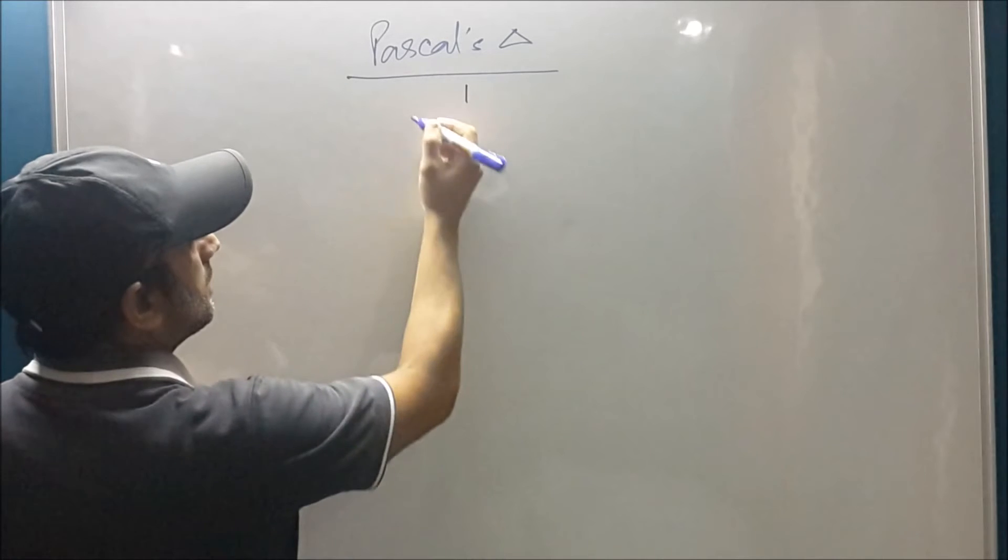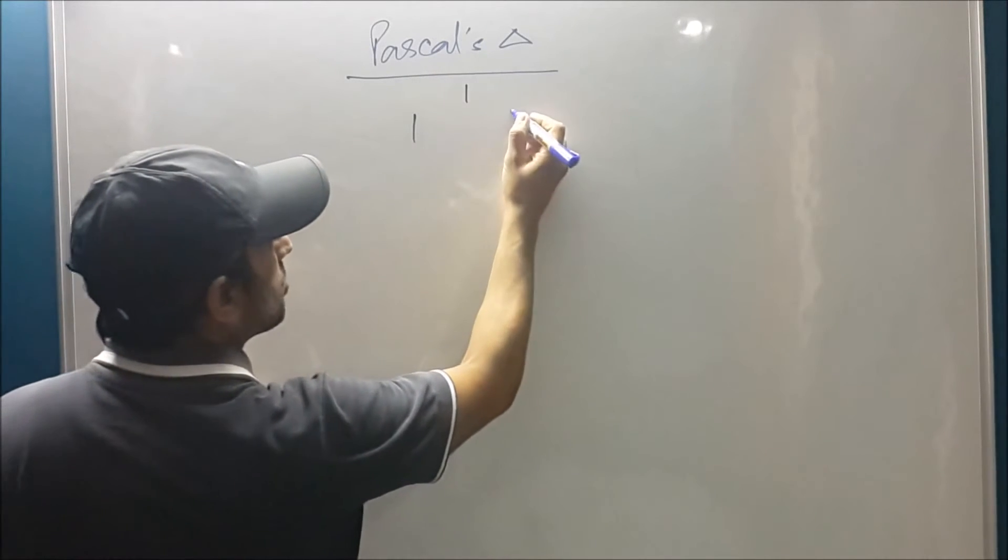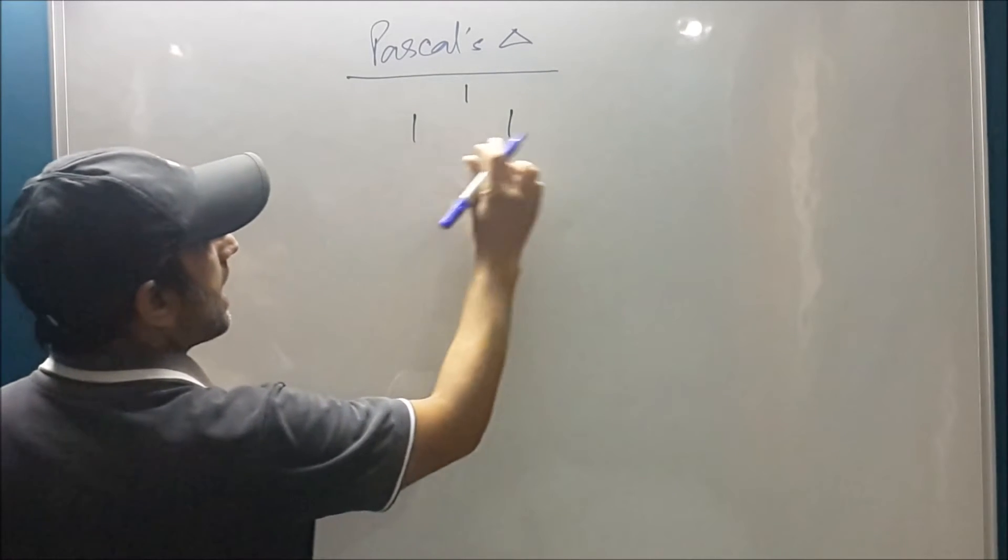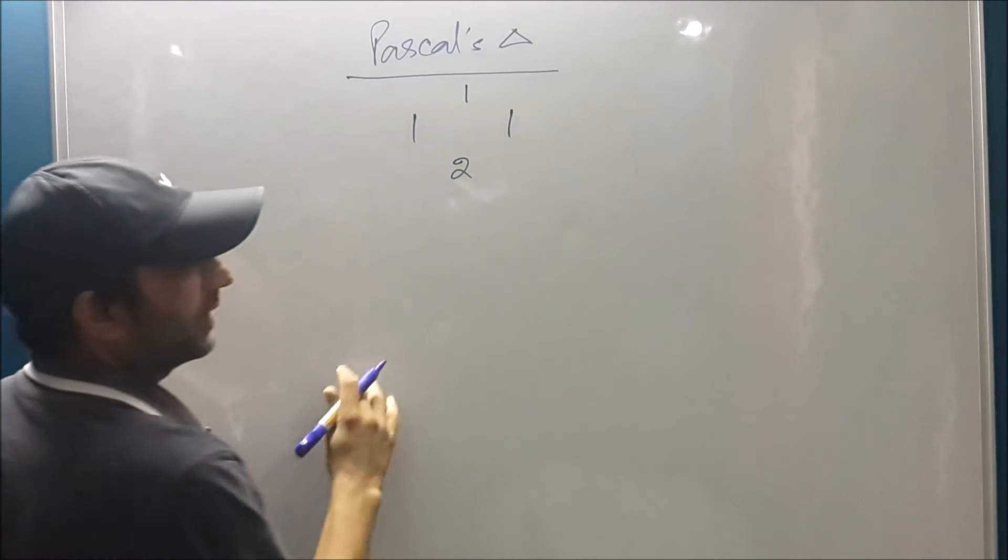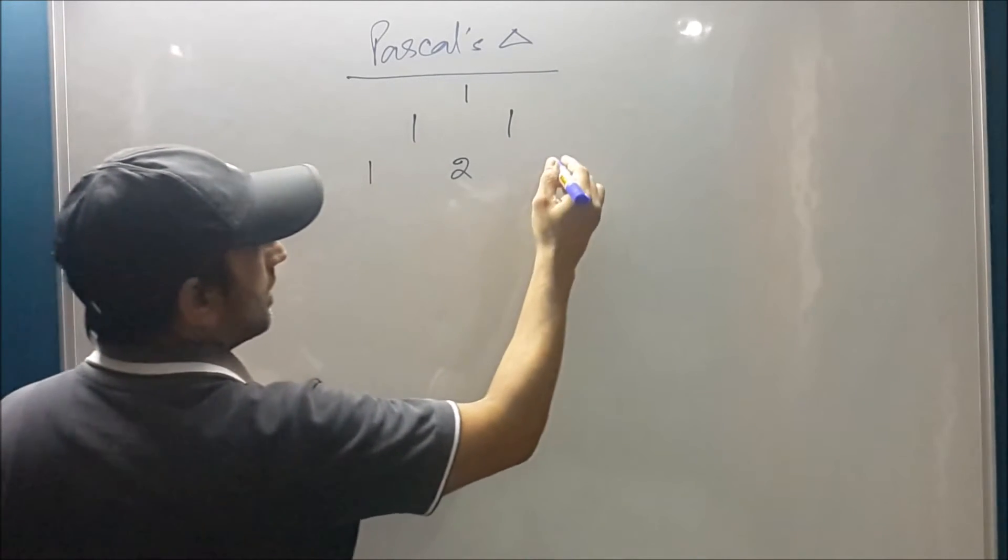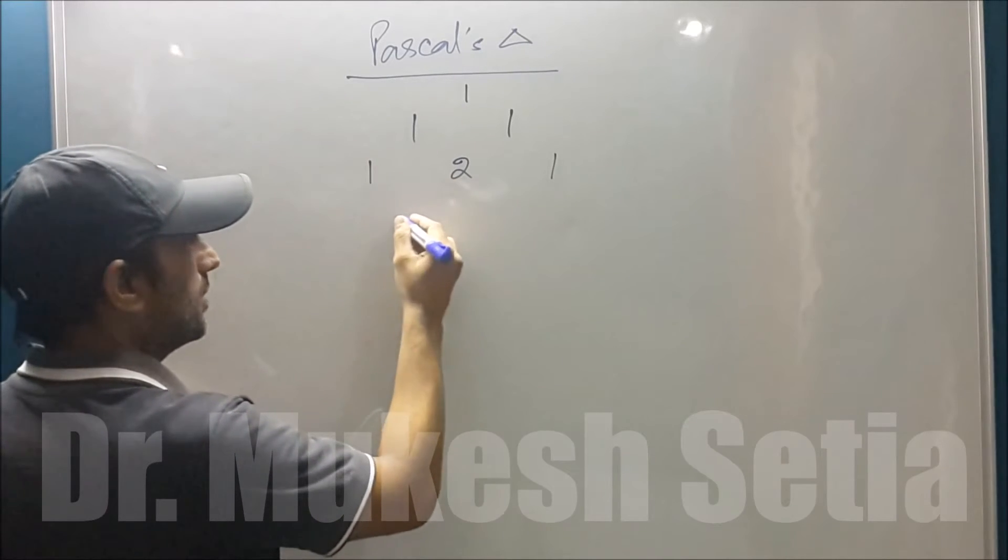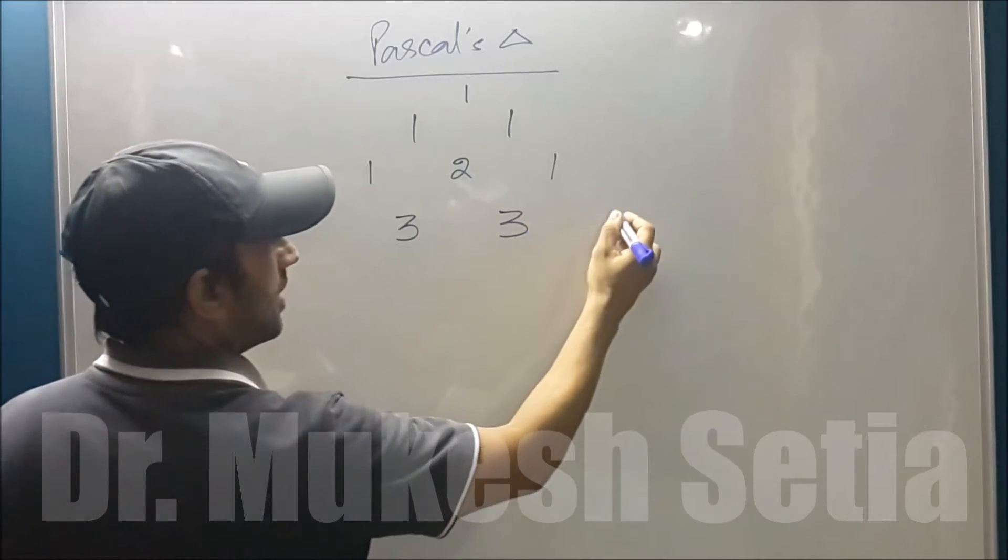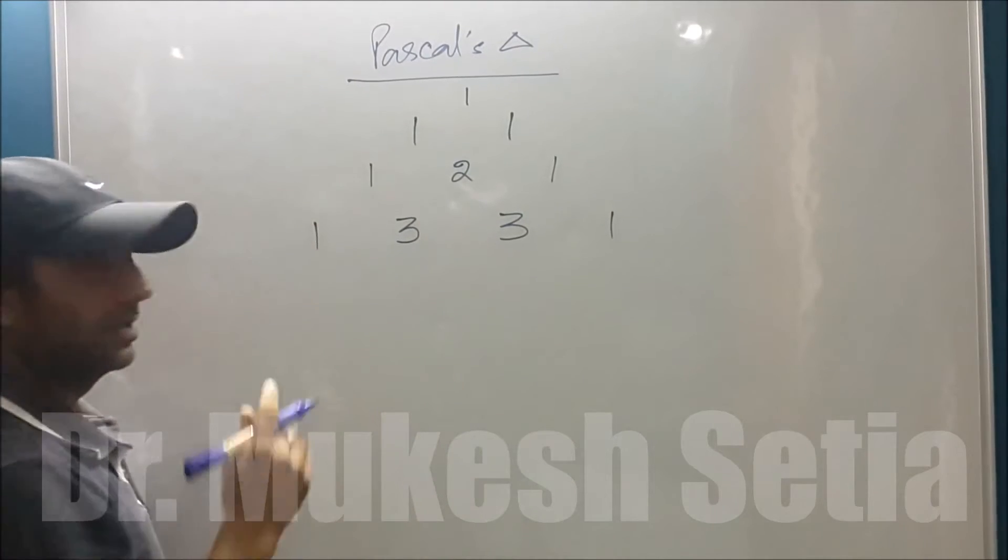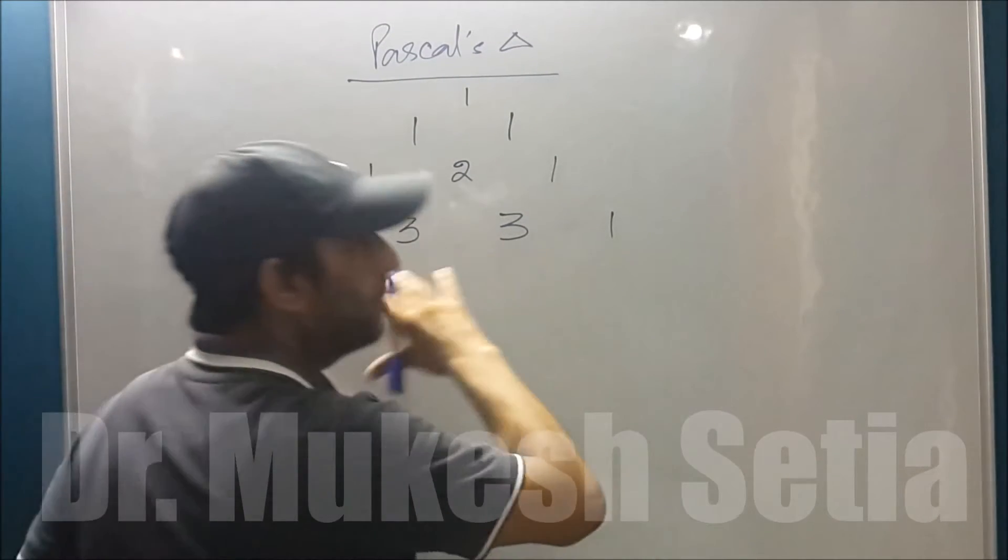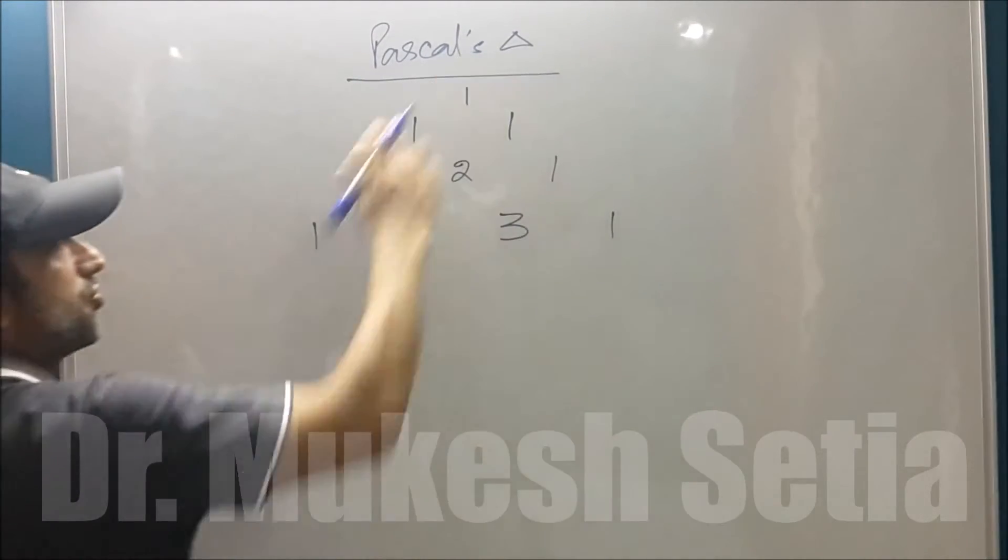I put one, then on a second row I put one, one and I add them. I write two and then enclose this with one, one. One plus two is three, two plus one is three and I cover this with one, one. This is how you keep on increasing the rows of a triangle.